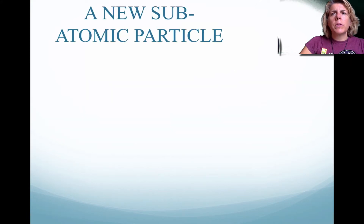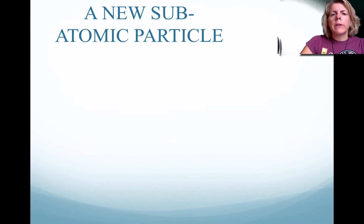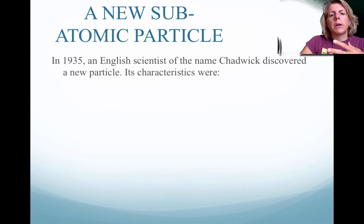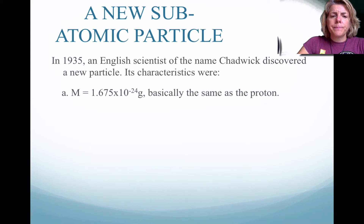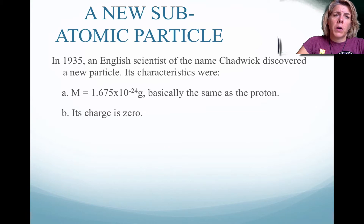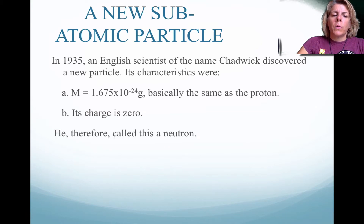So we talked about the discovery of the electron and proton. Well, there actually was another subatomic particle, and this man by the name of Chadwick had discovered this particle. He found that the mass of the particle was actually similar to a proton. However, he found that the charge was zero.